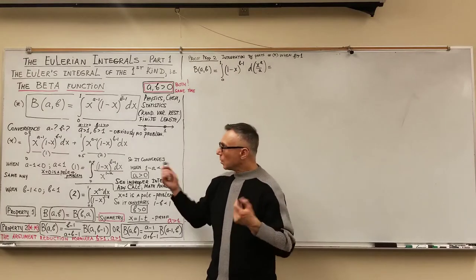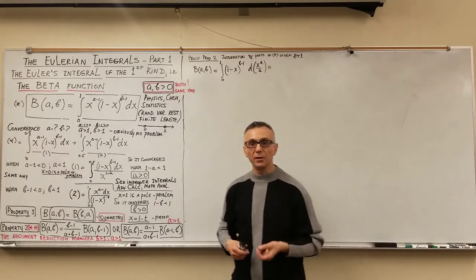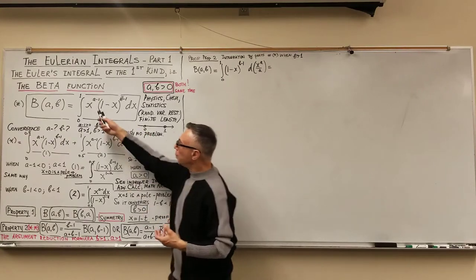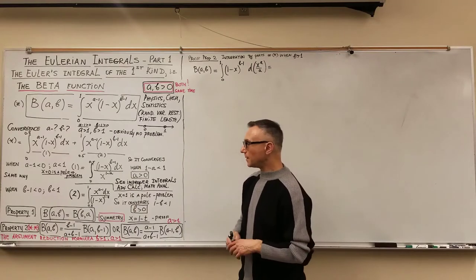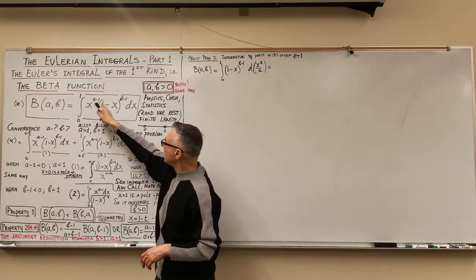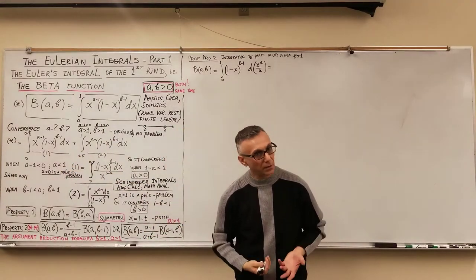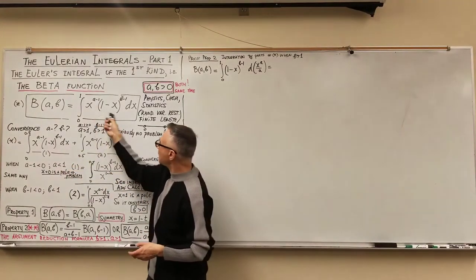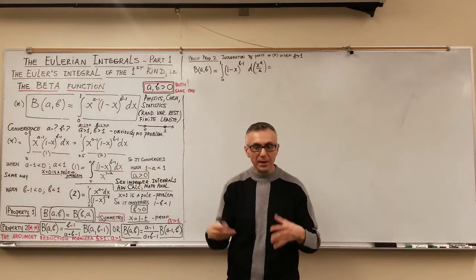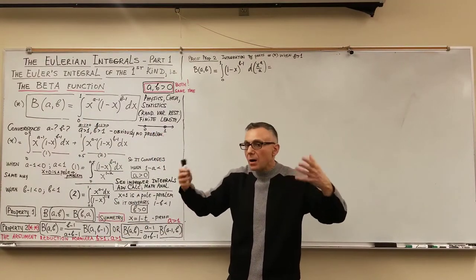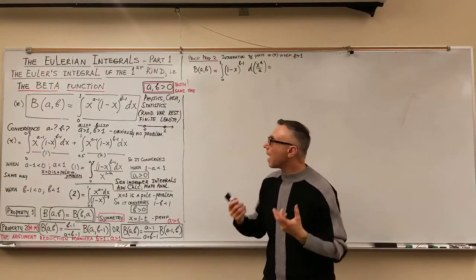In mathematics and calculus, when you deal with integrals, an important question is convergence — when does this integral converge, and for which values of the input variables a and b? Obviously, when both powers a minus 1 and b minus 1 are more than 0, there is no problem — the integral converges. Because all x values are between 0 and 1, the positive powers of those values keep the function bounded.